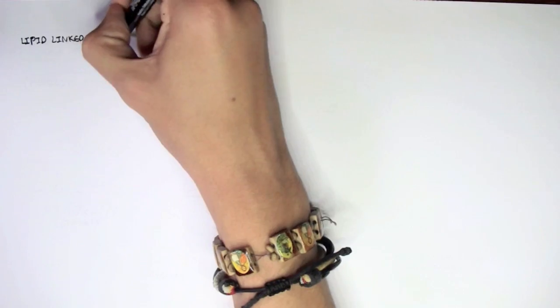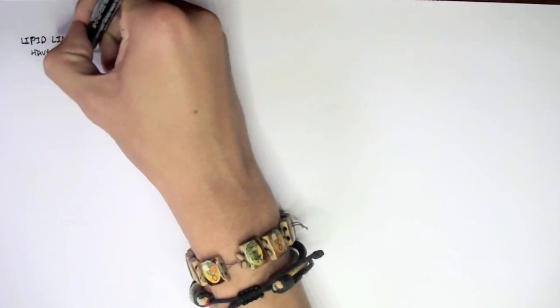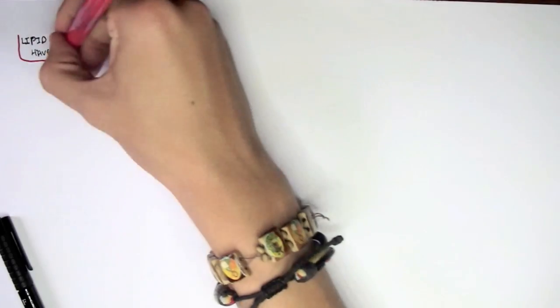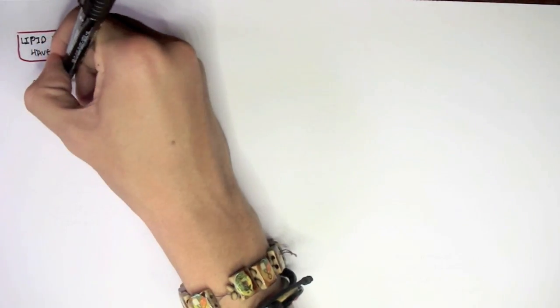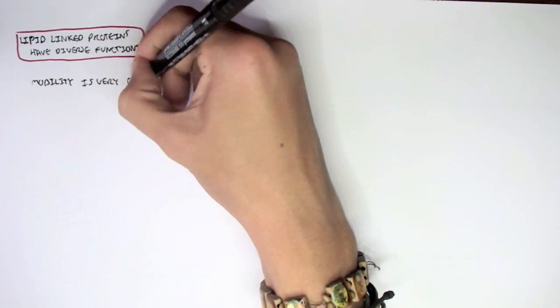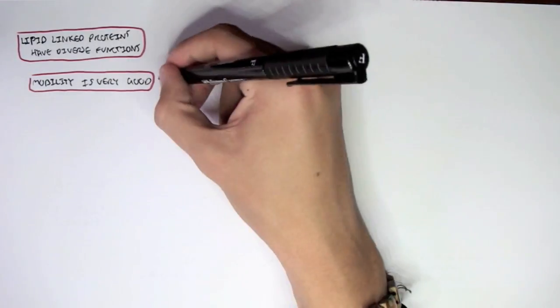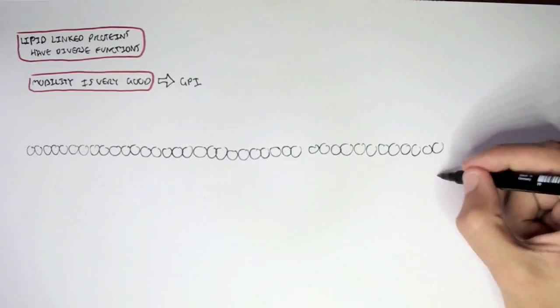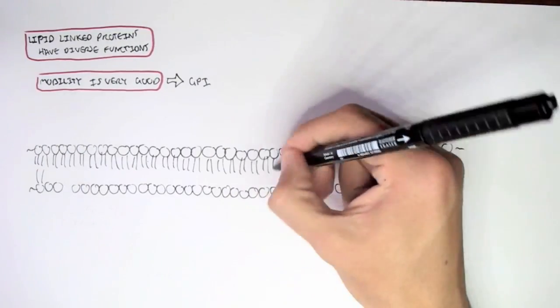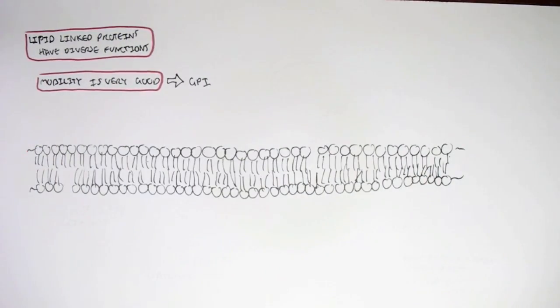Let's look at some other advantages these lipid-linked proteins have. So they have a diverse function, as we've mentioned, for communicating and signaling, for GPI. And these lipid-linked proteins actually have very good mobility, so they're very mobile, they can move around the cell membrane very easily. And a good example of this is GPI. And I'd like to portray this in the small diagram I'm drawing right now.